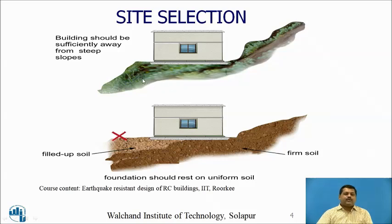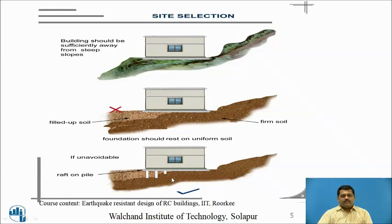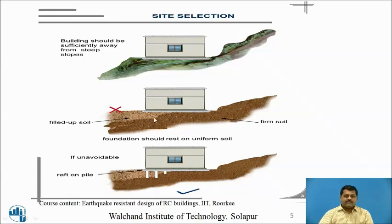Your building should be away from a steep slope. Now if we cannot change the site and firm soil as well as filled up or reclaimed soil are both present, what measure should we take? The measure is explained in a third diagram. On firm soil, a raft foundation is provided. For the reclaimed soil, piles or a raft-and-pile combination foundation is used, and those piles are anchored or end-bearing on the firm soil. This is the remedial measure required for this type of site.